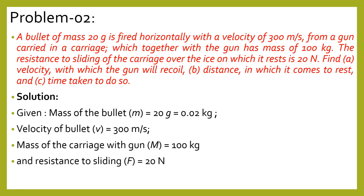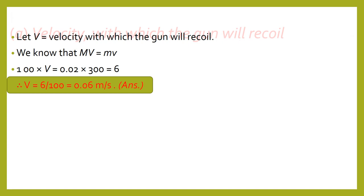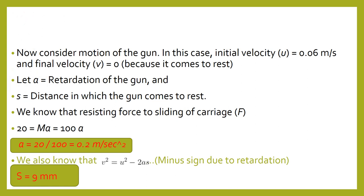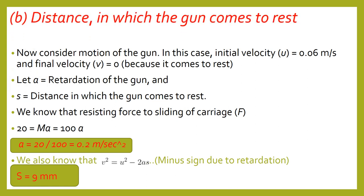Using the law of conservation of momentum — M × V = m × v — we substitute M = 100 kg, m = 0.02 kg, and v = 300 m/s. After calculation, the velocity of the gun with which it recoils, capital V, is 0.06 meters per second.